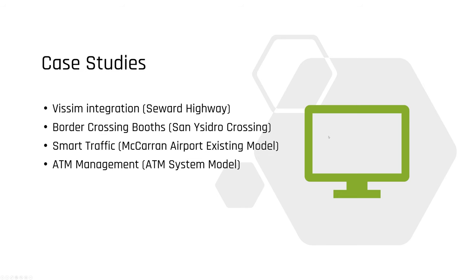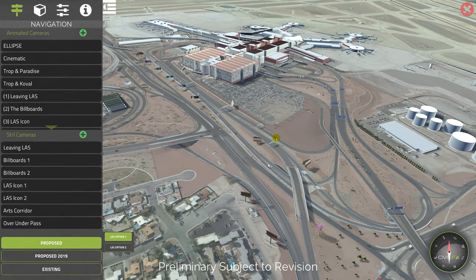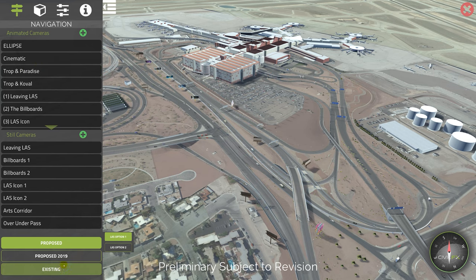That San Ysidro demo is just a small area. If we fully build it out the way we do our other models, all the buildings will look realistic, we'll get the mountains in the distance and distant traffic — all of that helps with immersion. This is McCarran airport here — a large area — so it's kind of what the San Ysidro model would look like once we actually get that contract.